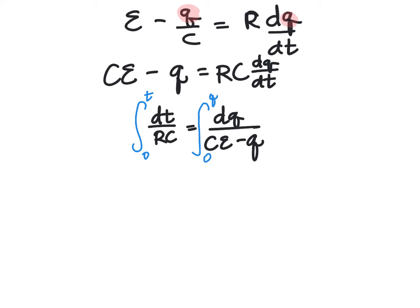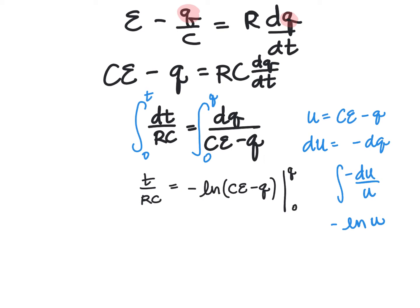Integrating the left is pretty easy, so we'll just have T over RC. And then this over here is a little more complicated, but you might remember that you can do a U DU substitution. So if U is capacitance times EMF minus Q, then DU would just be negative DQ, and so I could substitute in negative DU over U. And integrating that I get negative LN of U. So doing that substitution back over here, I'll have negative LN of U, which was capacitance times EMF minus Q, and I'm going to evaluate it from zero to some variable amount of Q.